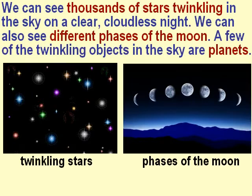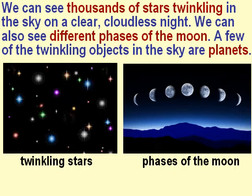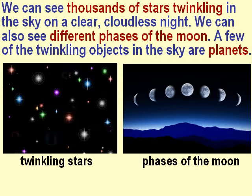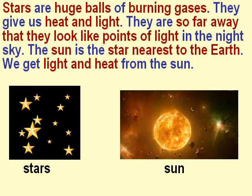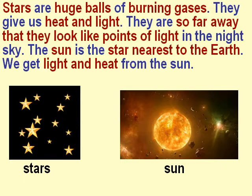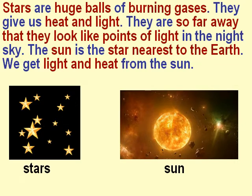We can see thousands of stars twinkling in the sky on a clear cloudless night. We can also see different phases of the moon. A few of the twinkling objects in the sky are planets. Stars are huge balls of burning gases. They give us heat and light. They are so far away that they look like points of light in the night sky.